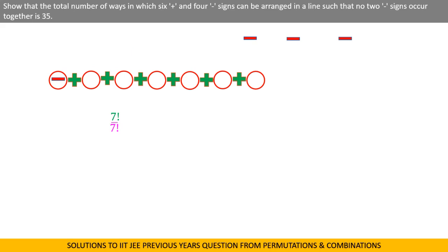Second one can be placed in 6 ways. Put it also at second vacant place. Third and fourth negative signs can be placed in similar fashion in 5 and 4 ways respectively.